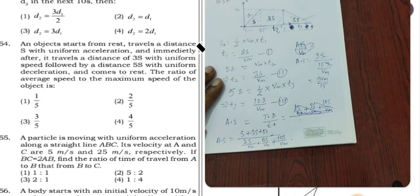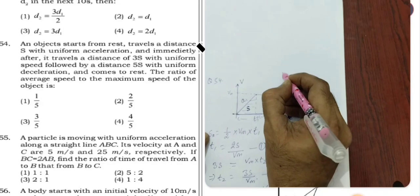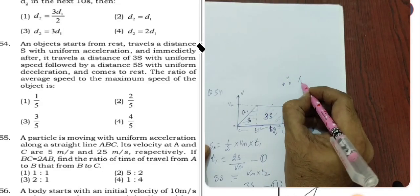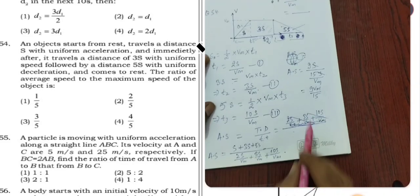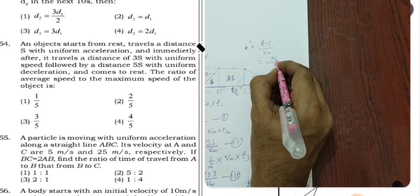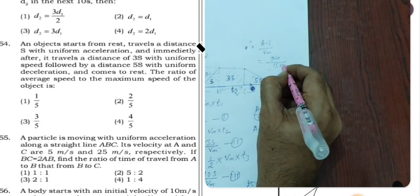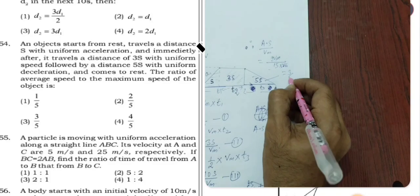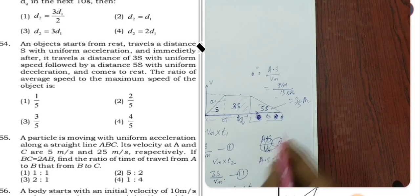What we want to find is average speed divided by Vm. Average speed is 9Vm by 15 divided by Vm, which equals 9 by 15, which equals 3 by 5. So our answer is 3 by 5. Therefore, option 3 is the correct choice. Thank you very much.